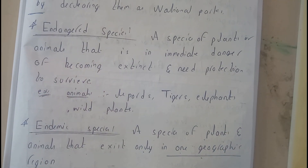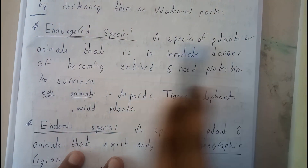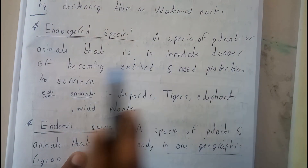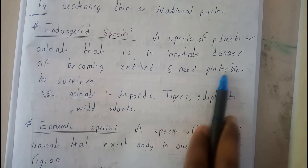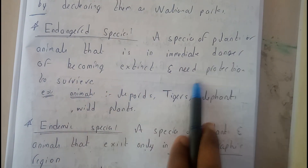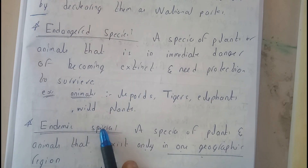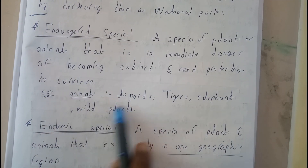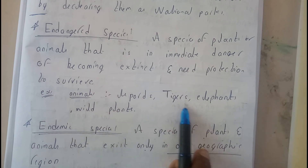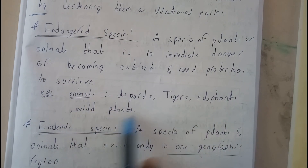Endangered species are those species which are going to go extinct in the upcoming years. A species of plants or animals that is in immediate danger of becoming extinct and need protection to survive. Examples include leopard, tiger, elephant, and wild plants.